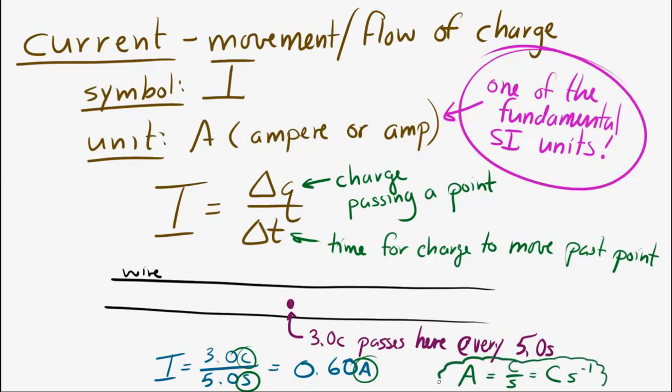Okay. Amp is equal to a coulomb per second. So, then the next question would be, well, current is the flow of charge. Does it have a direction? The answer is yes. The current is given a direction, and the current is the flow of positive charge. The direction of flow of positive charge.